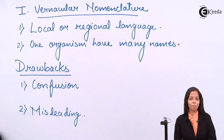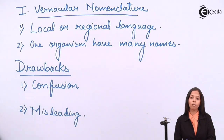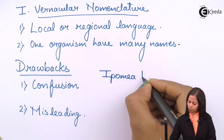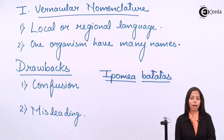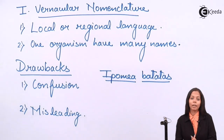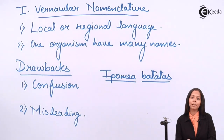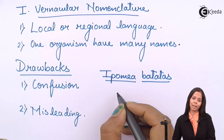For the drawback of confusion, the scientific name of sweet potato is Ipomoea batatas. It is called sweet potato in English, shakarkand in Hindi, ratadu in Marathi, and jenasu in Kannada, and different names in Assamese and Bengali. So when a person from north India goes to the east and speaks about shakarkand, people get confused about what they are referring to.